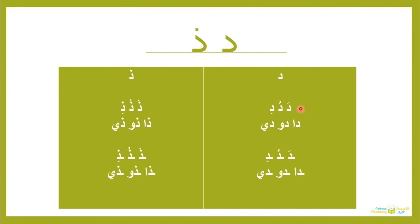Notice the difference between the short vowels and the long vowels: Da, Du, Di versus Daa, Duu, Dii. The Dal connected inside a word follows the same pattern. The Dhal is exactly like the Dal but with a dot on top, and it takes the same vowel combinations.